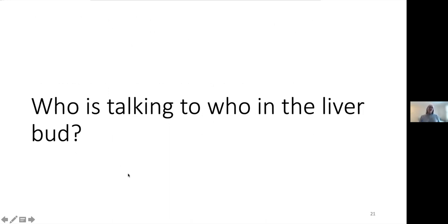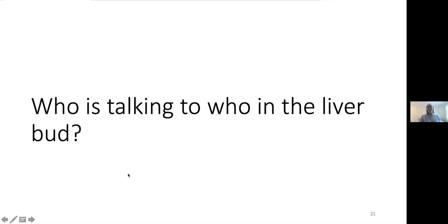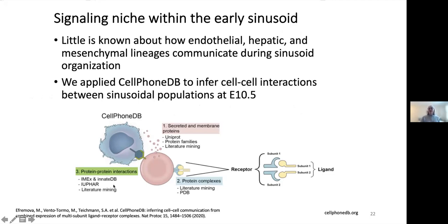We are very interested in who's talking to who in the liver bud. For that, we've been using CellPhoneDB. CellPhoneDB is probably the popular algorithm right now for looking at cell-cell interactions. We used this to look specifically at the signaling niche within the early sinusoid at E10.5, because otherwise it's just way too much data. What we like about CellPhoneDB is it's basically a repository of receptor-ligand pairs, and it also takes into account whether complexes — subunit complexes — are necessary for the signaling to happen.